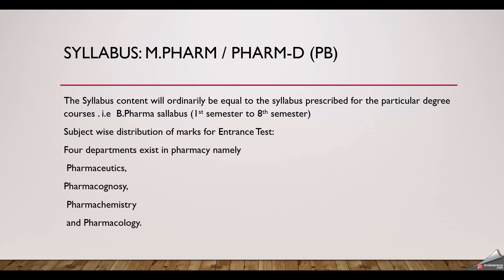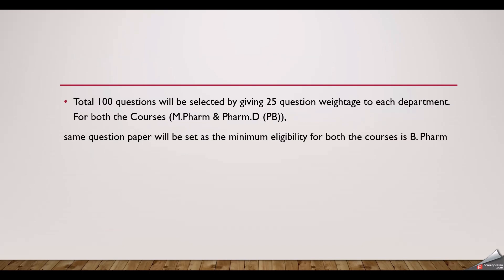There are mainly four departments in Pharmacy — Pharmaceutics, Pharmacognosy, Pharmachemistry, and Pharmacology. From each department we will get approximately 25 questions, making a total of 100 questions in the question paper. This 25-question weightage applies to each department for both M-Pharm and PharmD courses, since the minimum eligibility criteria for both is B-Pharm.